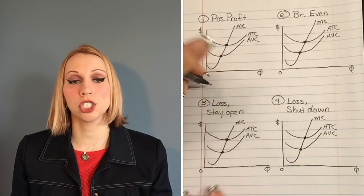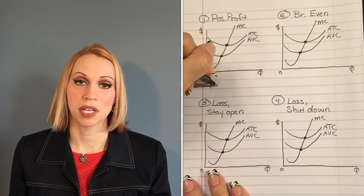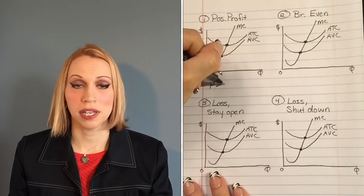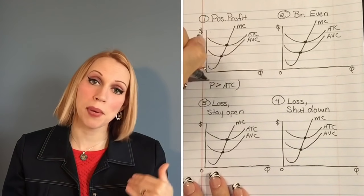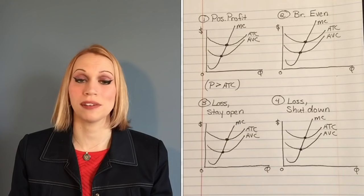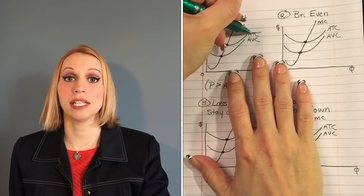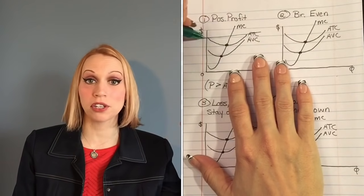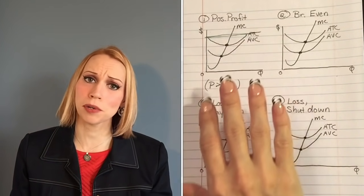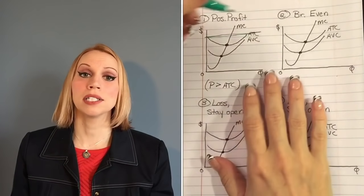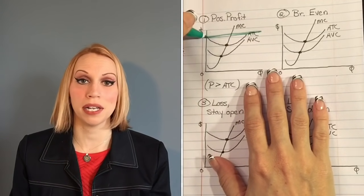Let's look at what situation one — making a positive profit — would look like on a graph. If you're making a positive profit, your average revenue curve is going to be above your average total cost curve at some output level. So your demand curve is going to be slicing above your ATC. If you're earning positive profit, that demand curve is pretty high on your graph, meaning there are some output levels where you're bringing in more money than you're spending.